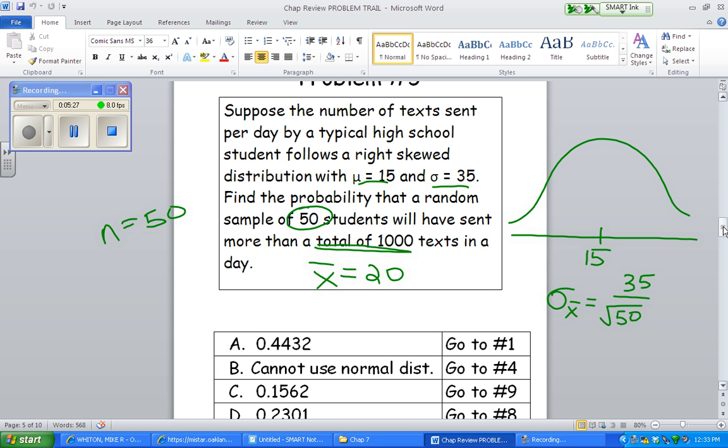Okay, and what we want to do is figure out how likely is it to get more than a total of 1,000, so more than 20 per person. So, what I'm thinking is 20 is up here. I want to know how likely is it to get a sample mean in that shaded region up there. Okay, that's going to be our question.